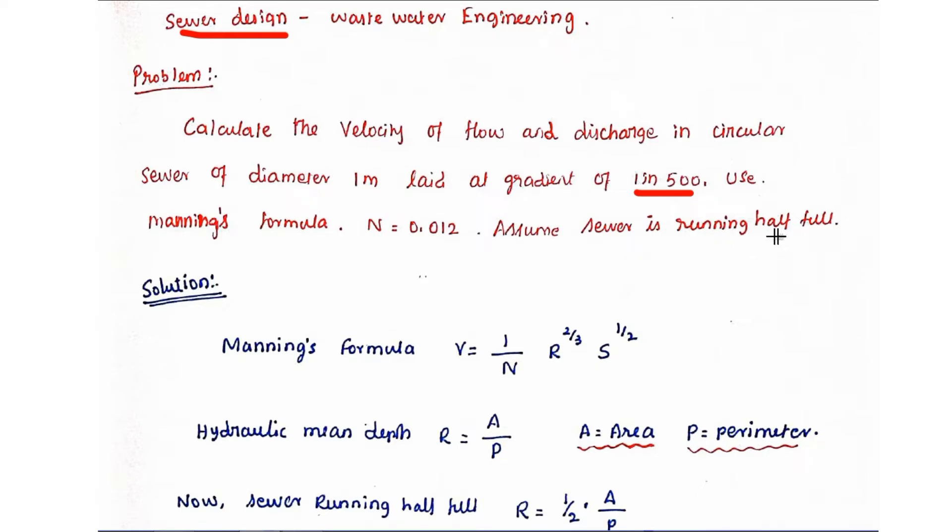Assume sewer is running half full. The given data is circular sewer, diameter is 1 meter, gradient s equal to 1 in 500, n value is 0.012, and sewer is running half full.